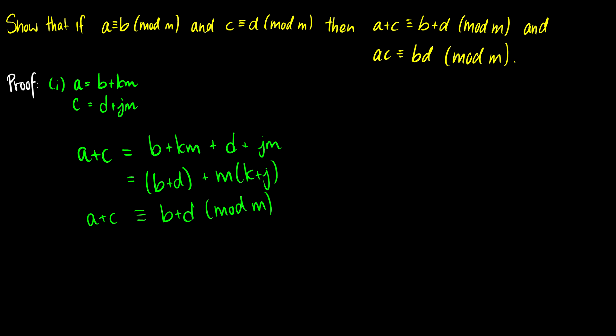And it's the same formula. So before we had a is equal to b plus km. Well, here's our a, our a is a plus c, our b is b plus d, and our k is our k plus j. It follows the same formula. So we're good there.